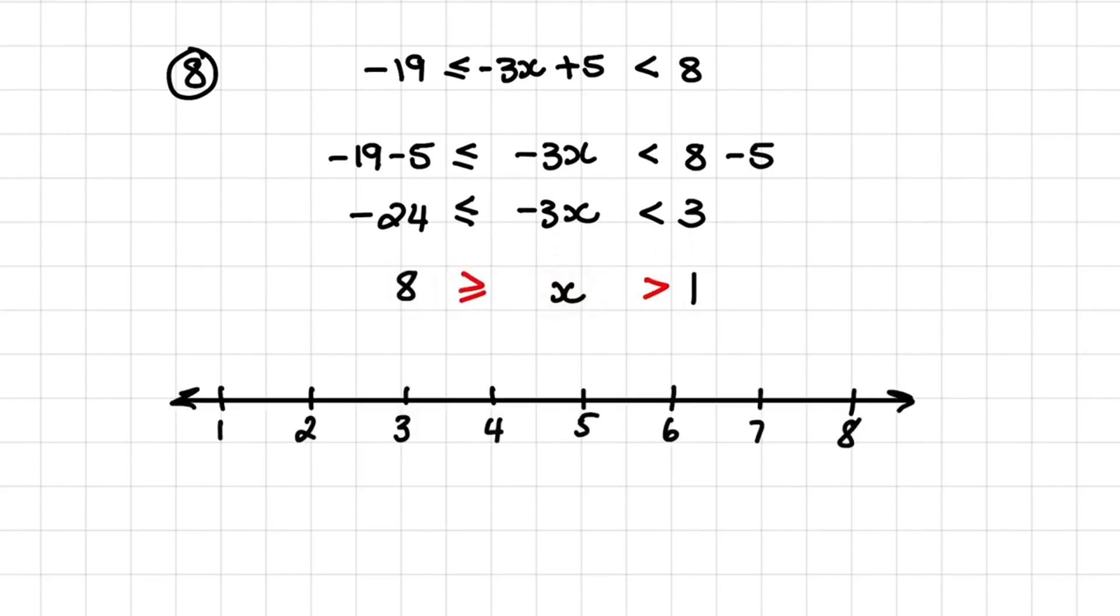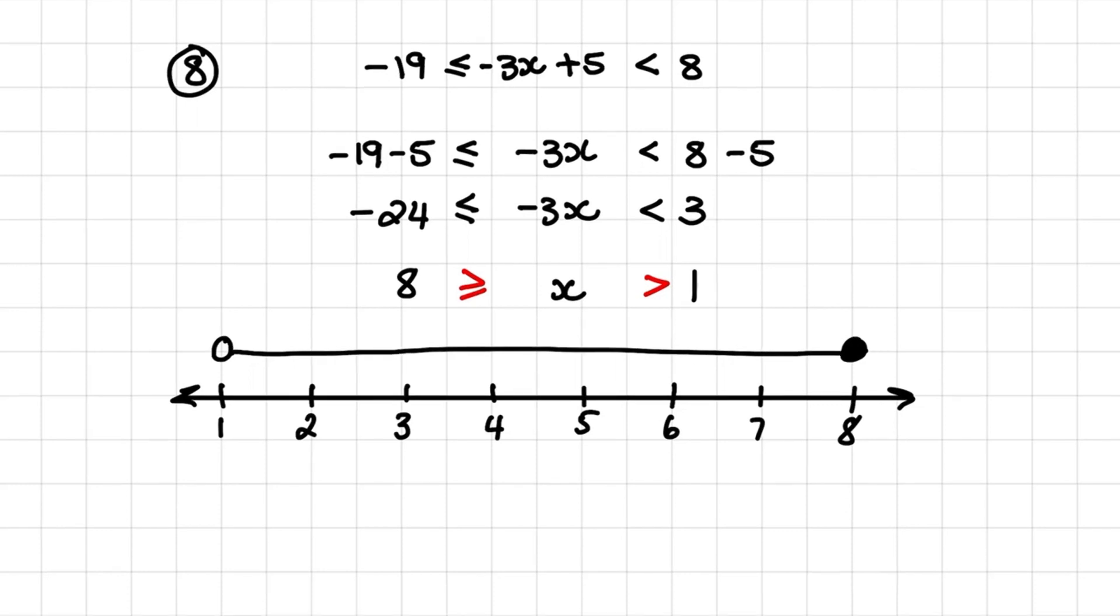So let us indicate those values on the number line. I have 1 with an open circle and 8 with a closed circle because x can be equal to 8. And x is somewhere in between those values. And if I indicate that in our interval notation, I have a curved bracket for my minimum value of 1 and a square bracket for my maximum value of 8.